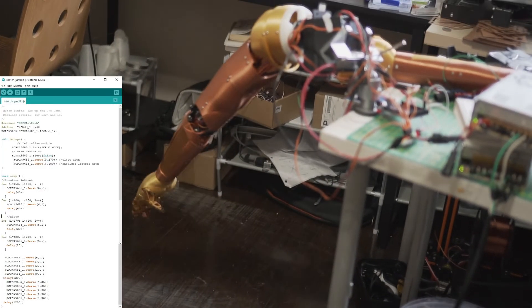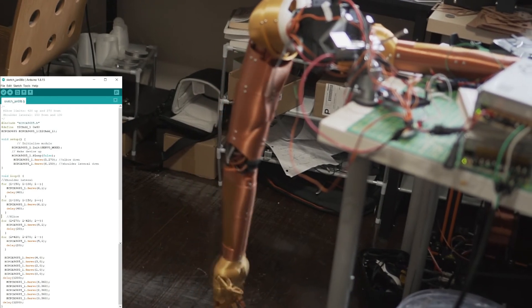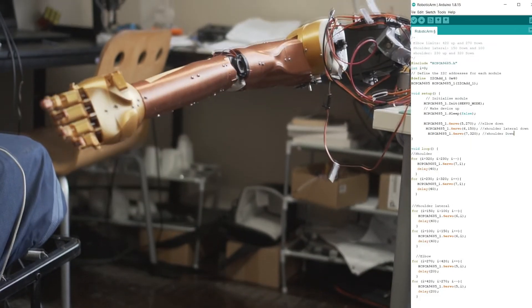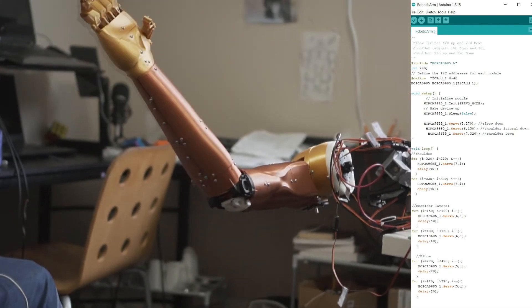One of the servos in the shoulder. And here you can see an example of a combination of all those movements.